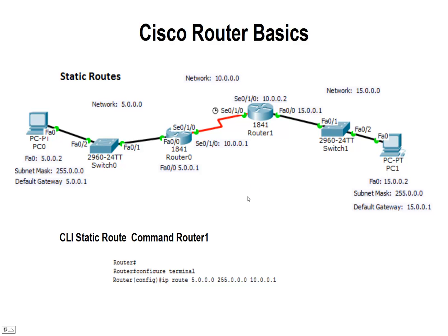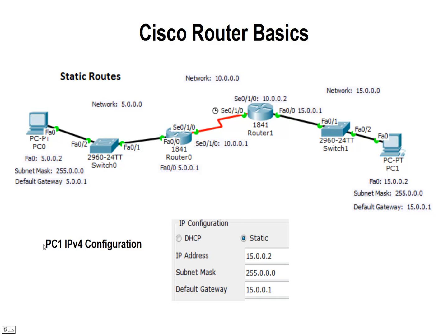We've got both static routes set for both routers. All we need to do is set up the last PC. It's going to be configured for IPv4, static, with IP address 15.0.0.2, subnet mask 255.0.0.0, and the default gateway for this PC is 15.0.0.1 — that is the first port on the router which the PC is connected to. It will take all its IP traffic and move it to that port, and the router will forward it to the next router if it's destined for network 5.0.0.0.